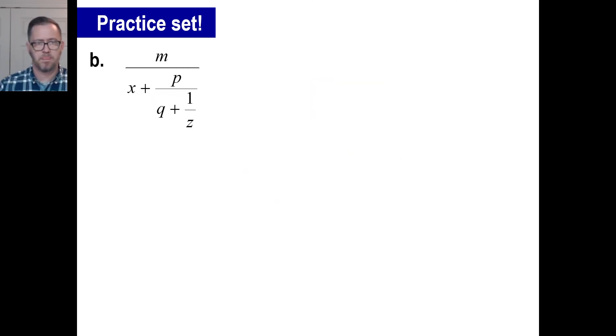Okay. Well, first we're going to have Z as our common denominator. So this right here will turn into QZ plus 1 over Z. And that's we flip that. We multiply. We get PZ over QZ plus 1. Okay.